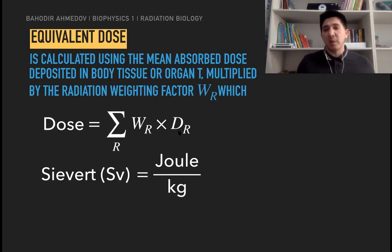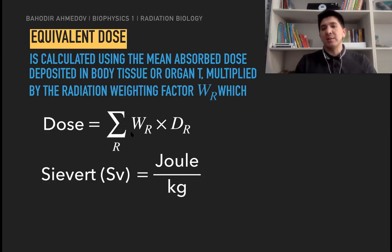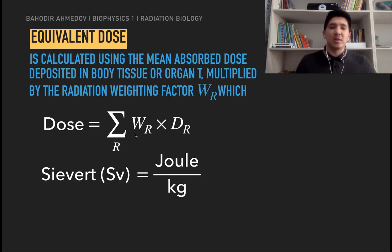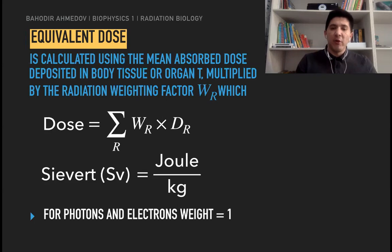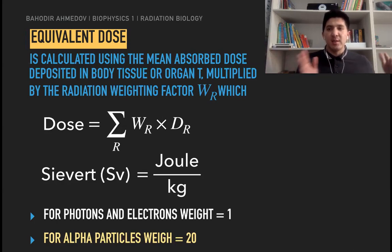The dose — measured as absorbed dose or kerma in joules per kilogram or gray — is multiplied by the unitless radiation weighting factor, giving a new unit called the sievert. For photons or electrons, the weighting factor W_R equals one. For alpha particles, W_R equals 20, meaning alpha radiation is 20 times more damaging than beta radiation.